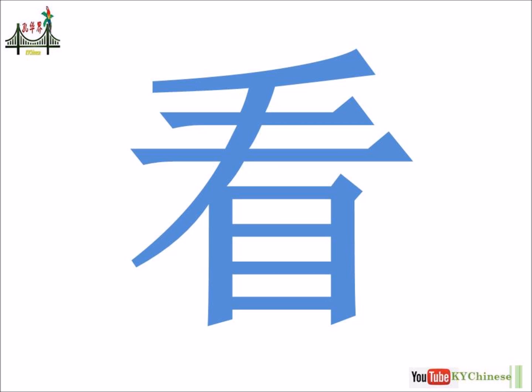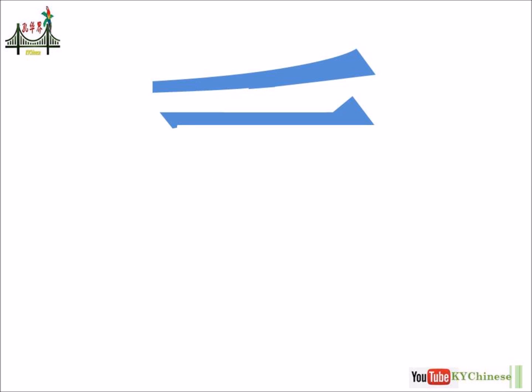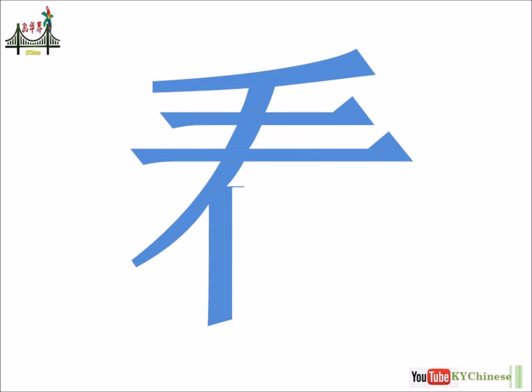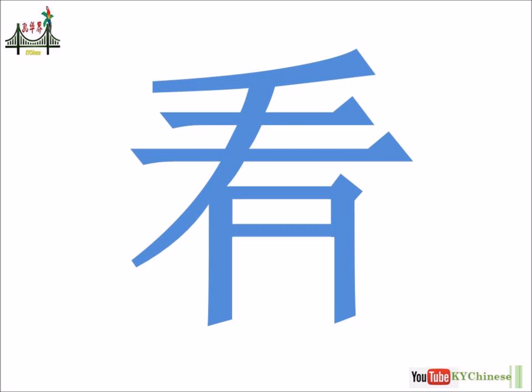The character for the word 看 is made up of nine strokes. Let's do the count together: one, two, three, four, five, six, seven, eight, and nine. Nine strokes.